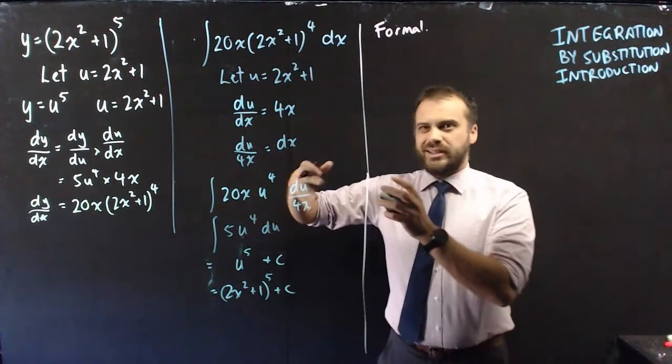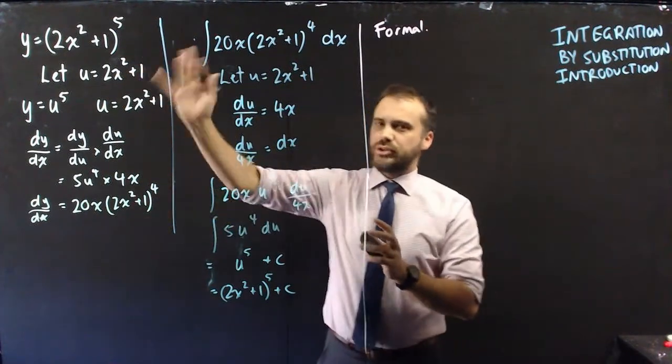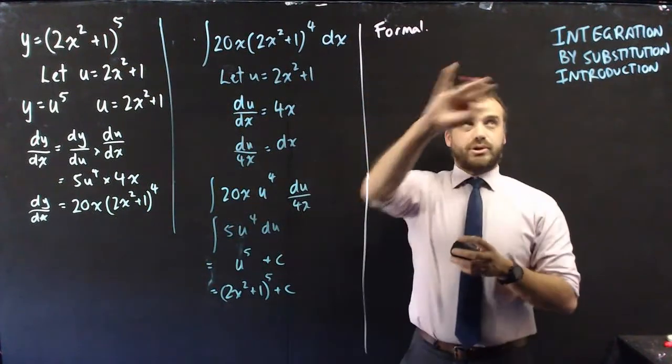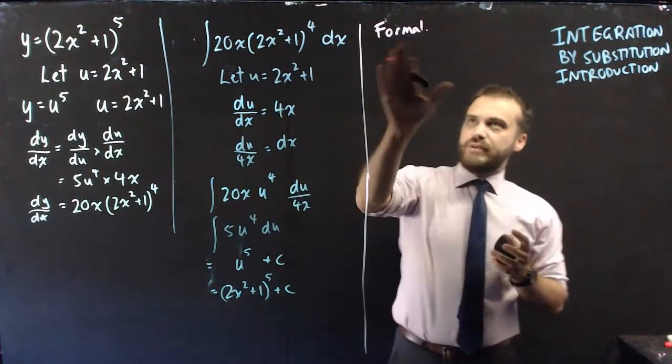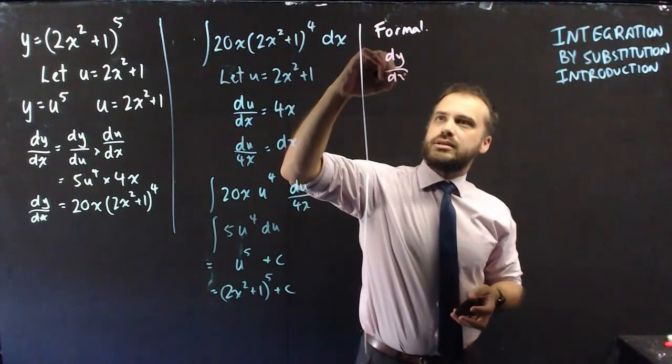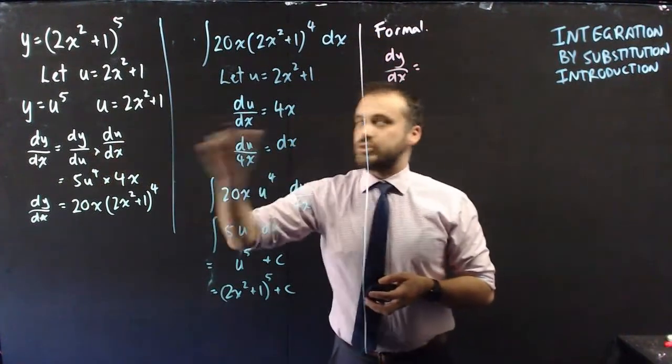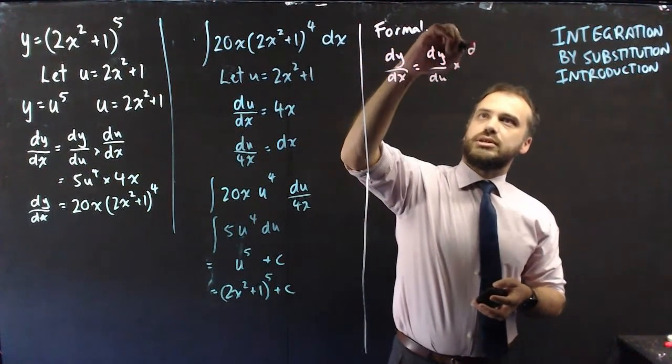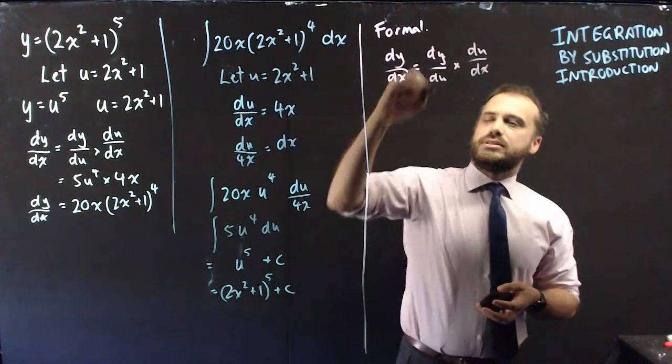This is an example that shows you that we can find the derivative of something and then we can reverse it by using integration by substitution. Let me formalize it here by telling you that dy/dx, using the chain rule, is always dy/du times du/dx.